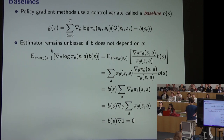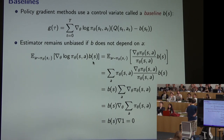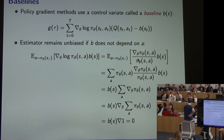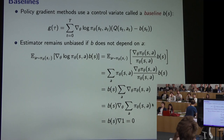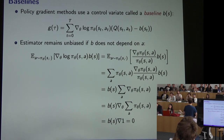To see why: the expected value of the new term is the expectation of the baseline times the score. Applying the score function trick in reverse, the gradient of the log probability becomes a fraction; writing out the expectation explicitly as a sum weighted by policy probabilities, those probabilities cancel. We're left with the gradient of the sum of all policy probabilities given the current state, which sums to one — and the gradient of one is zero.